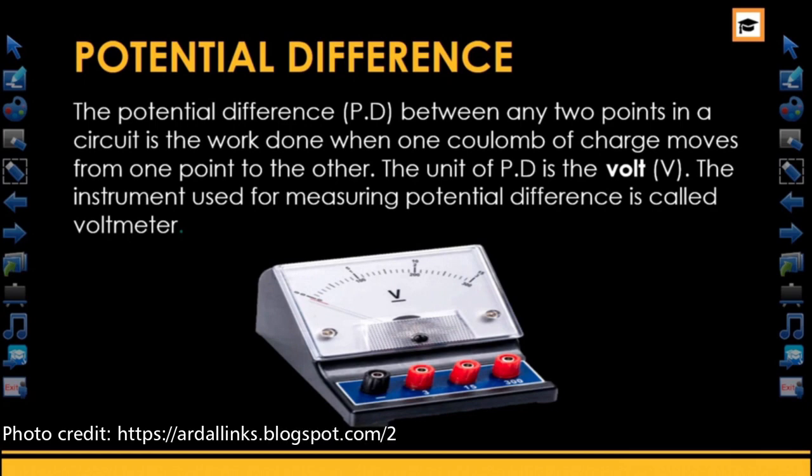The instrument used for measuring potential difference is called the voltmeter. As you can see, it is similar to the ammeter, just that the symbol V is shown on it. It is also used for practical purposes.